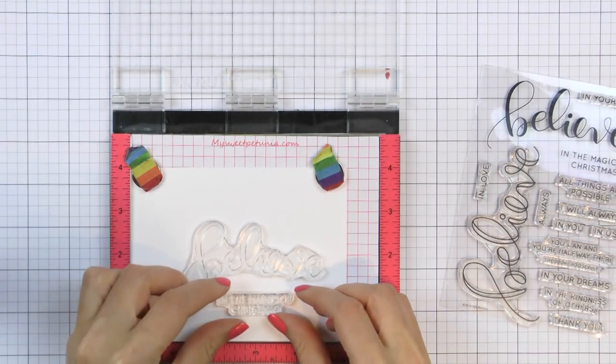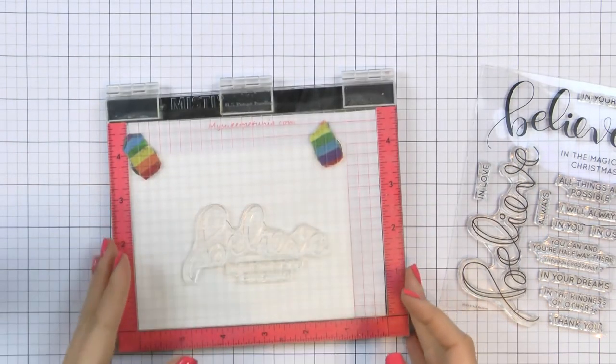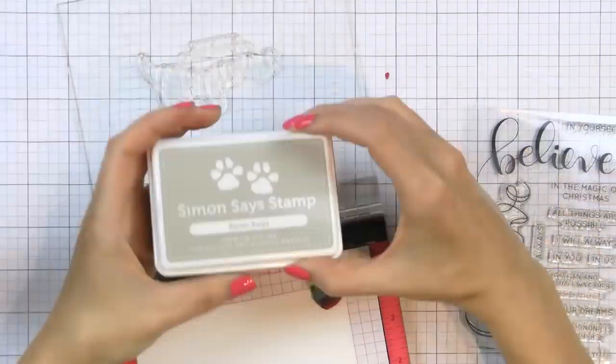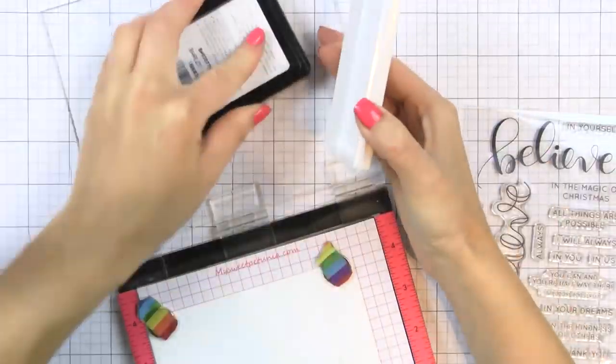I'm going to be using shades of grey ink to do my sentiment stamping and I'll use a different color for each panel. I'm starting with Barely Beige and I'm inking and stamping my image three times to make sure I get a perfect impression.